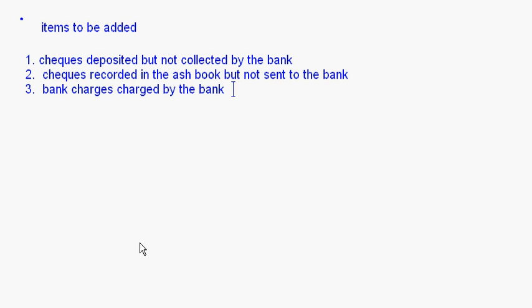The fourth item is interest charged by the bank. The bank is charging interest — that is again a debit — so it increases the overdraft balance as per the passbook, but this has not been recorded in the cash book. So the cash book overdraft balance is less compared to the passbook. This should be added. Remember: whenever the passbook overdraft balance is more, it should be added; whenever the passbook overdraft balance is less, it should be deducted.